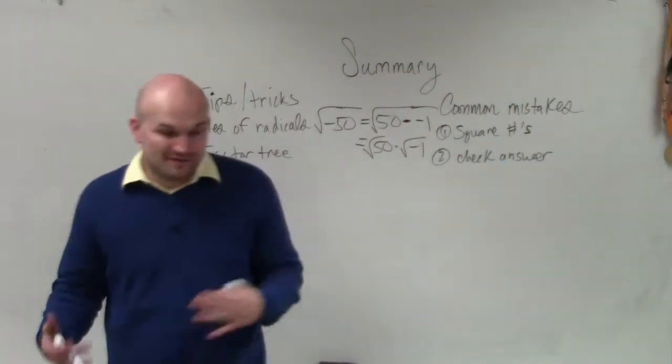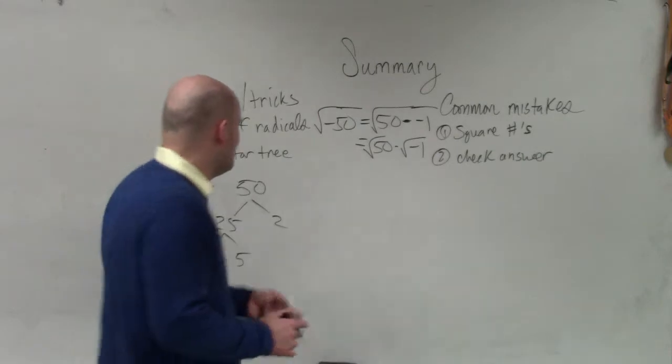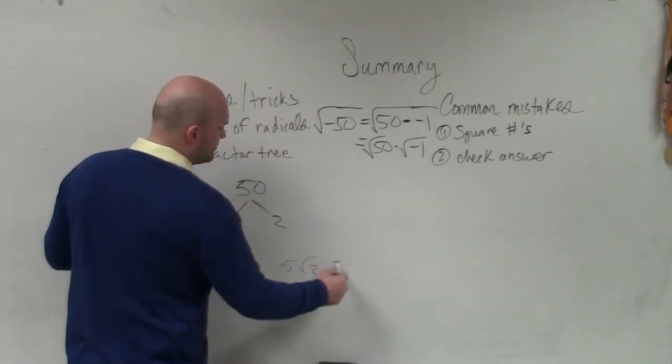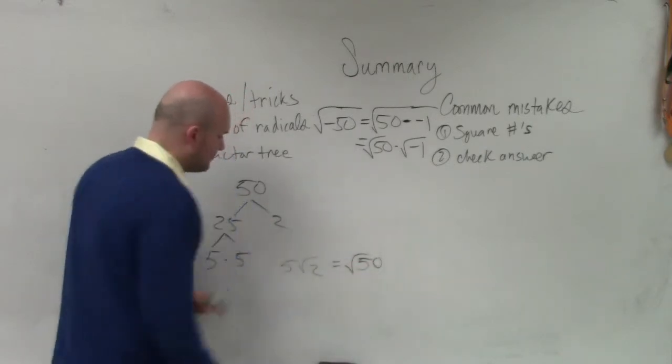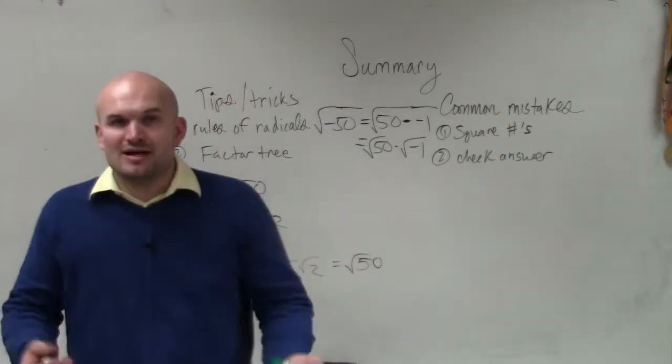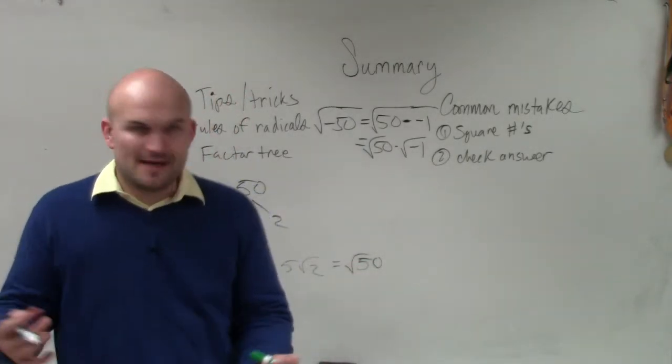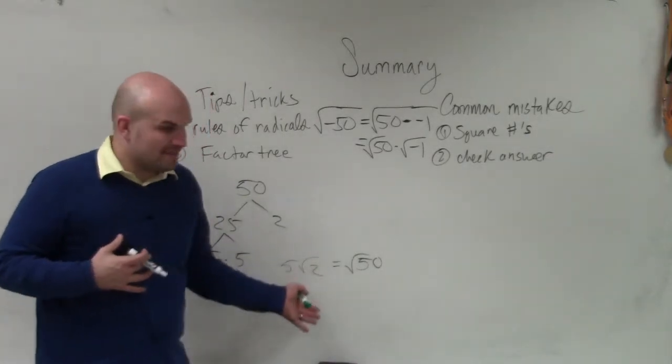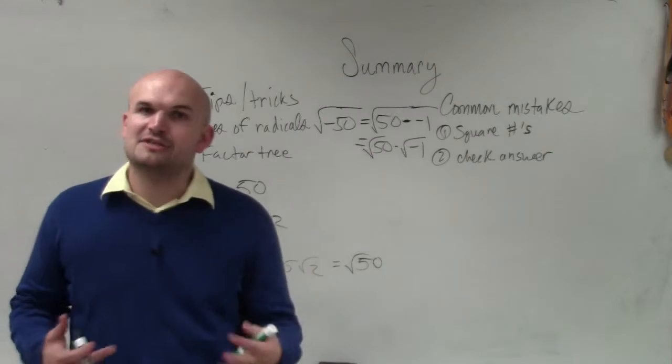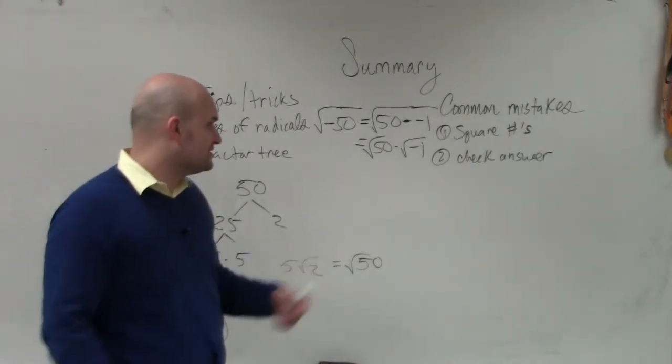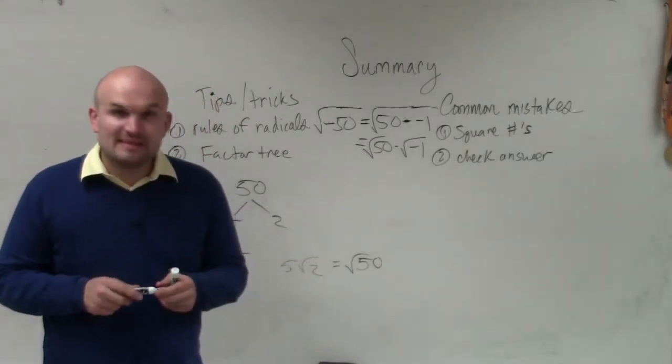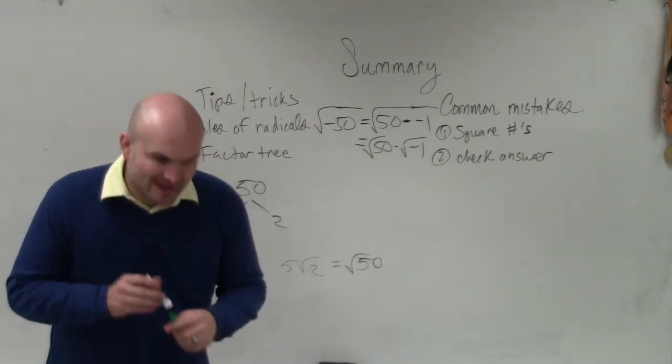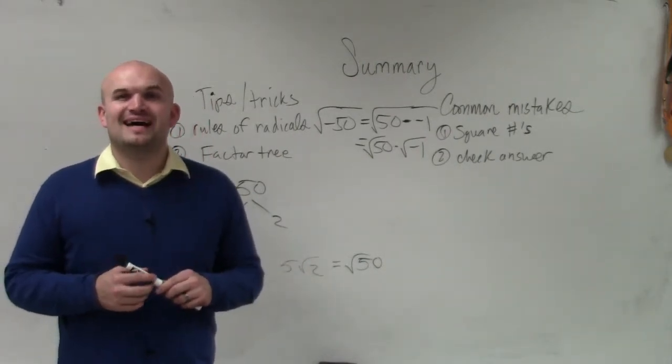And the third thing is check your answer. If you have a calculator, plug it in. If your answer is 5 square root of 2 and you want to see, is that the same thing as square root of 50, plug both of them in your calculator. Make sure that your decimals are the same. Even though I don't like seeing decimals and I don't have my students turn them in, you can always double check to make sure you did your answer correct. So there you go, ladies and gentlemen. That is just a basic summary for rewriting an expression using your imaginary unit i. Thanks.